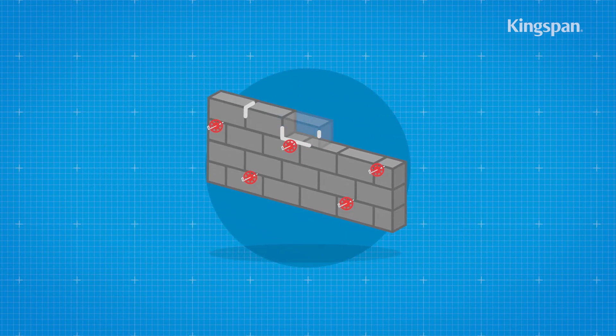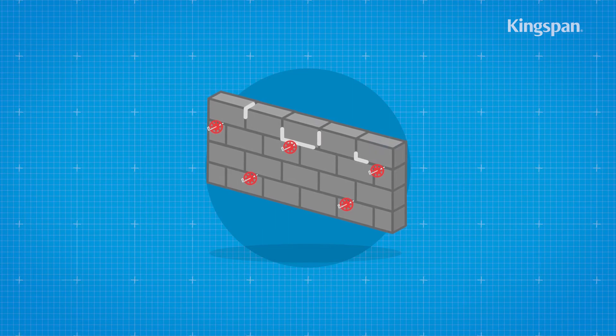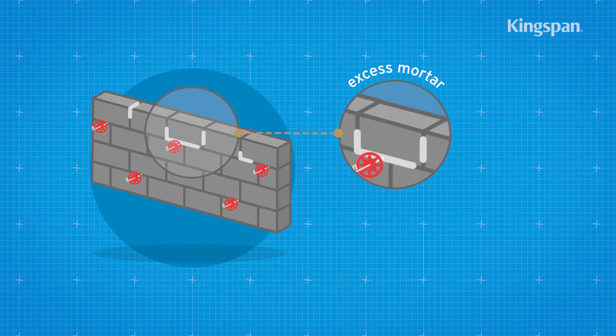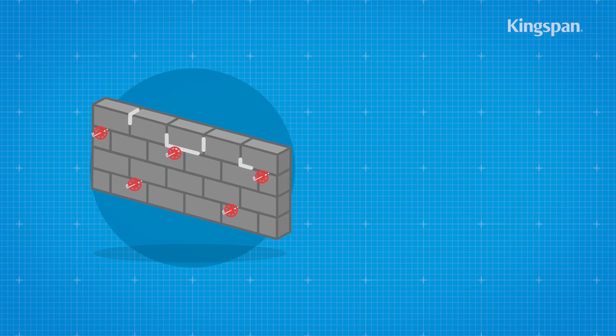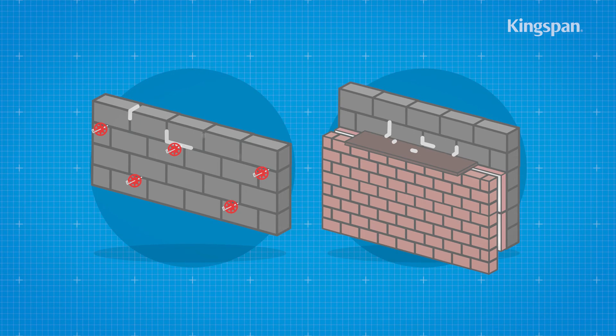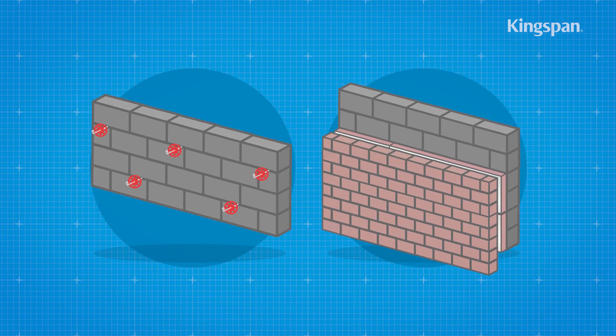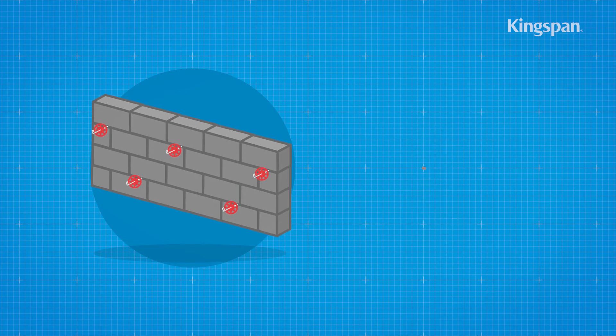The next course of blockwork should then be installed to secure the ties. After raising each section of the inner leaf and before installing the insulation board, excess mortar should be removed and mortar droppings cleaned from exposed edges of the installed insulation board.